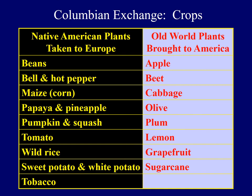Items taken from North America and brought back to Europe include beans, tomatoes, and potatoes — all crops from the Americas brought back to Europe. Also notable is that tobacco was a so-called New World crop.